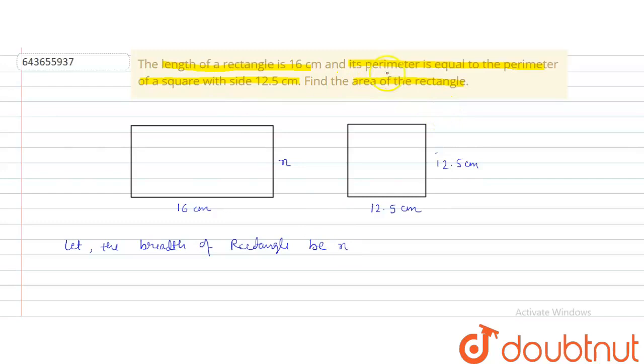So what is the condition given? Condition is the perimeter of rectangle. Perimeter of rectangle is 2(l + b). So l is 16 plus breadth is x, is equal to the perimeter of square. So 4 into side. This is the equation. So we are solving this equation.